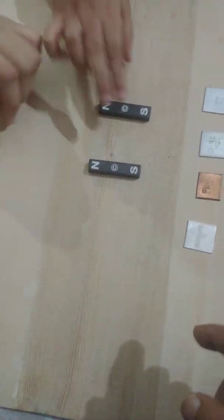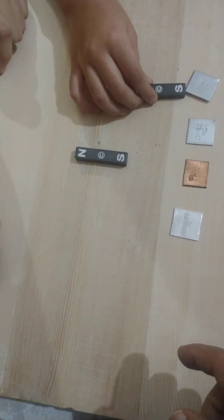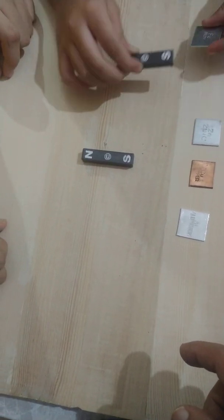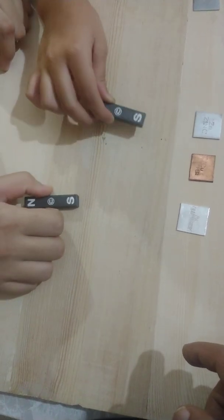Let's try getting it towards the magnet. Let's see which one gets attracted to the magnet. Oh, wow. Iron. Iron gets attracted. So, iron is a magnetic substance.